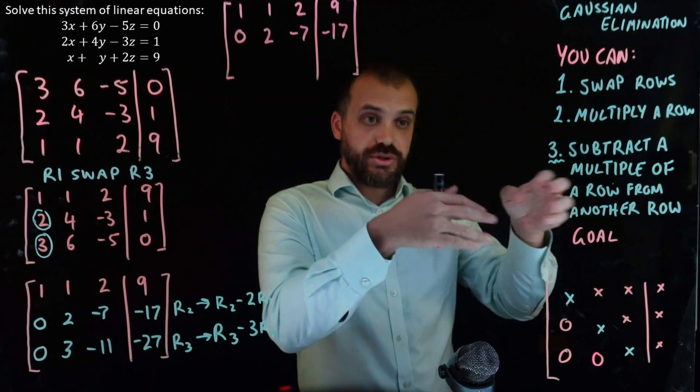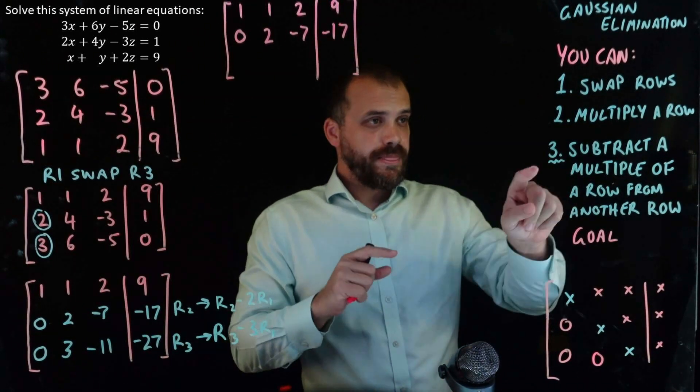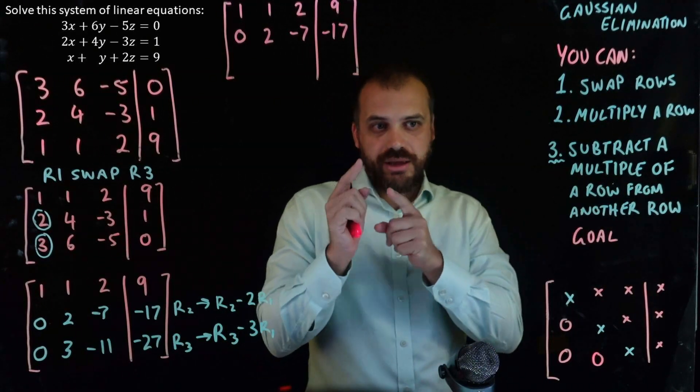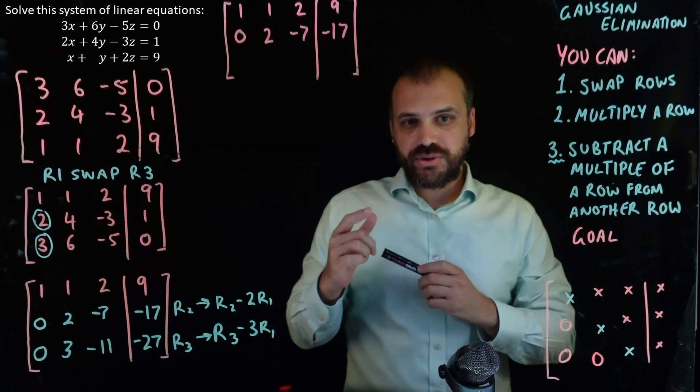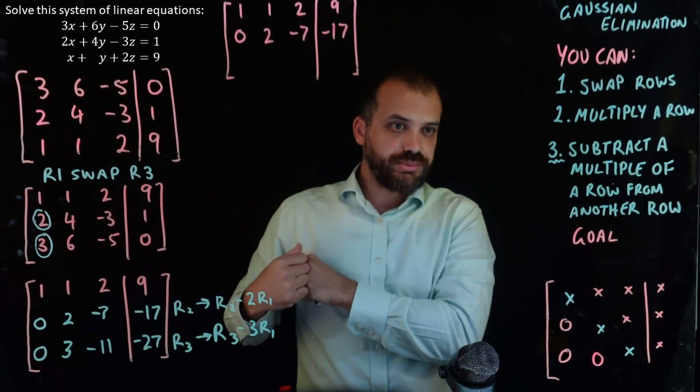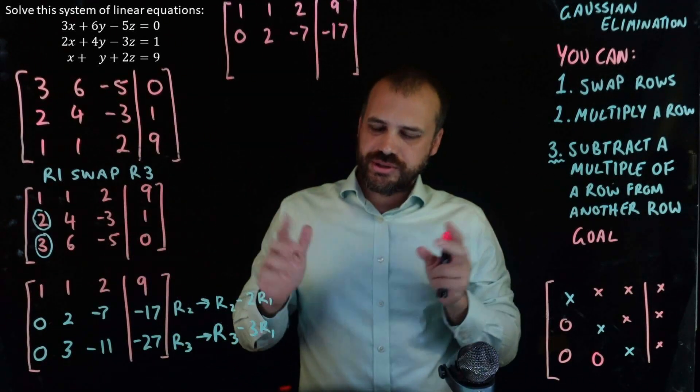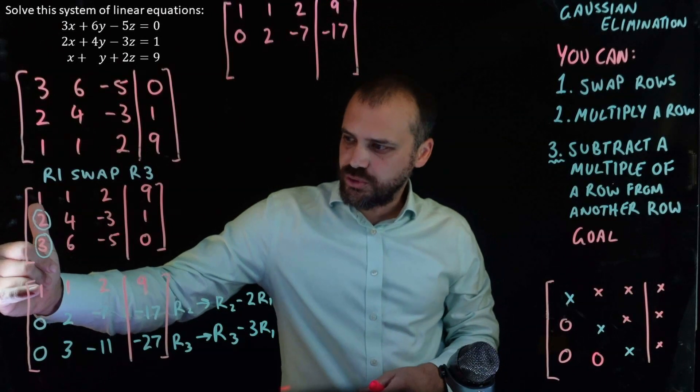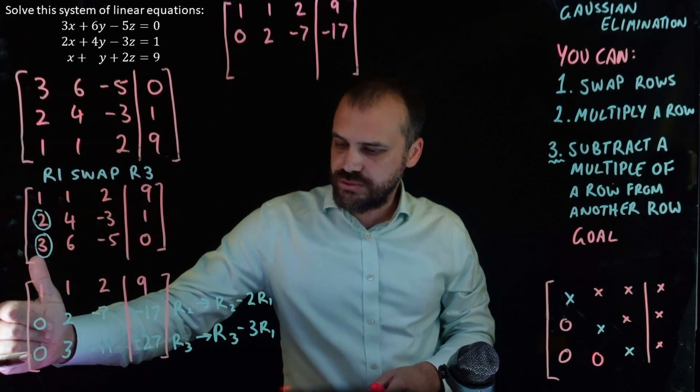Now, you might be thinking, well, we're going to do the same thing again, and we are. Subtract a multiple of a row from another row. And you might be thinking, well, we'll just jump to row one again and we'll subtract a multiple of that. It never works because if you subtract a multiple of row one from this row here, you end up ruining the good work you've done with that zero.